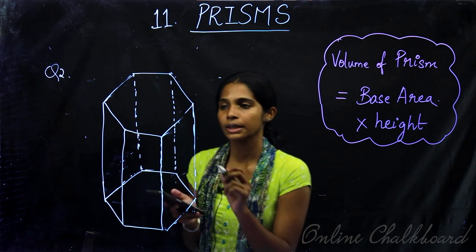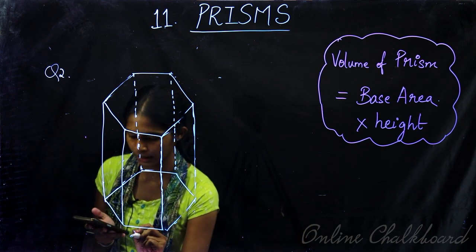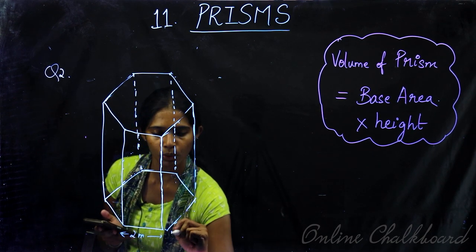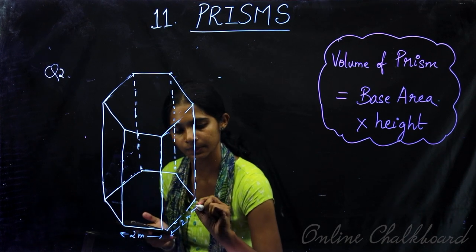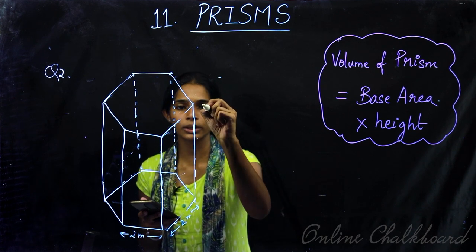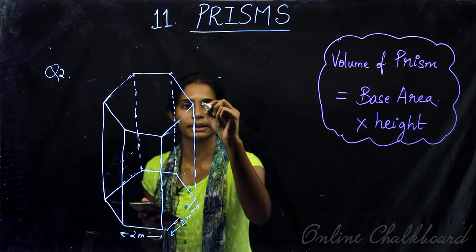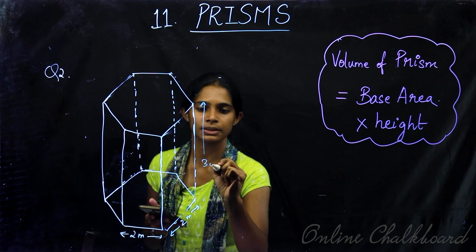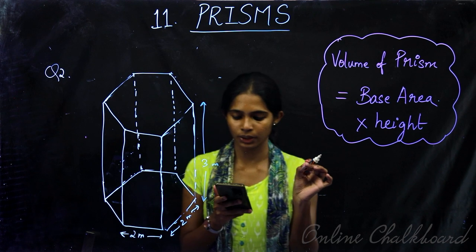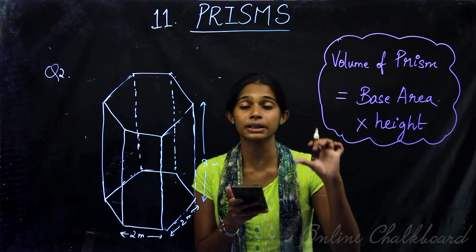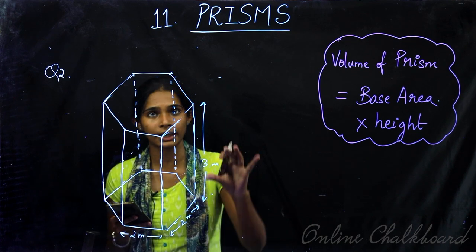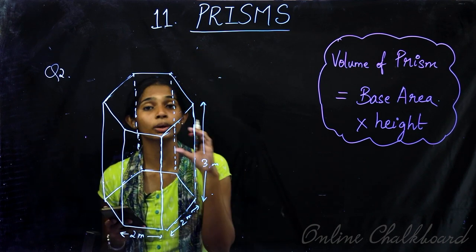This hexagonal shape has 1 side of 2 meters, so it has 6 sides each of 2 meters. It is 3 meters deep. The condition is that it now has water only 1 meter deep — the water is only up to 1 meter, not the full 3 meters.